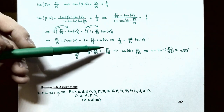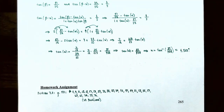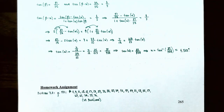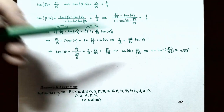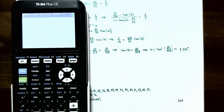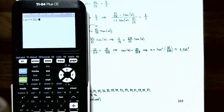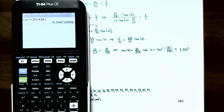To find alpha, we take the inverse tangent of both sides. Since inverse tangent and tangent are inverses of each other, alpha equals inverse tangent of 35 divided by 438. With the calculator in degree mode, this is approximately 4.569 degrees, or about 4.57 degrees. That's the angle between the two guy wires R and S.